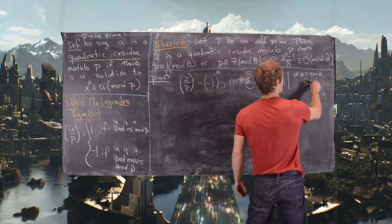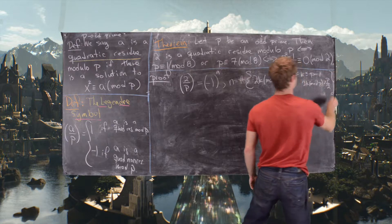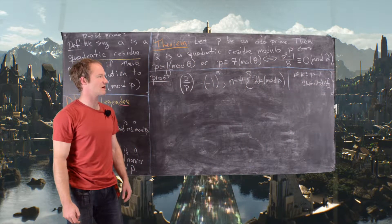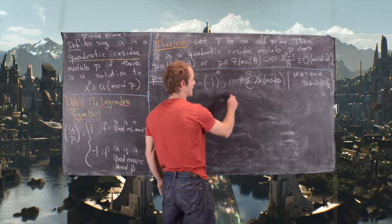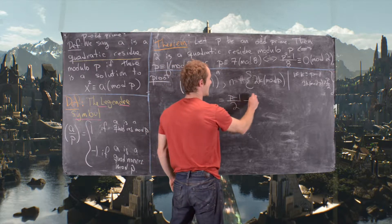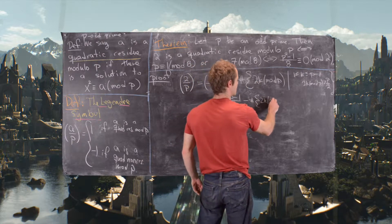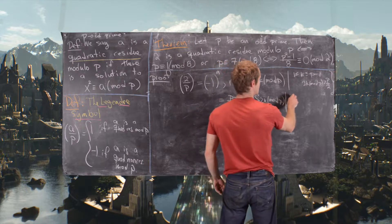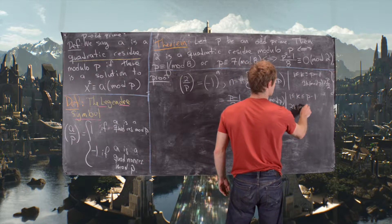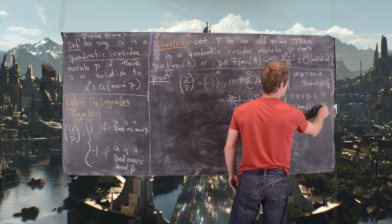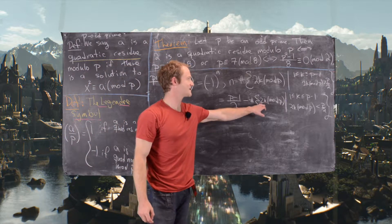Now notice that n equals (p−1)/2 minus the number of elements in the set {2k mod p} where 2k mod p is less than p/2. It turns out we can get a handle on this smaller set more easily than the original one.